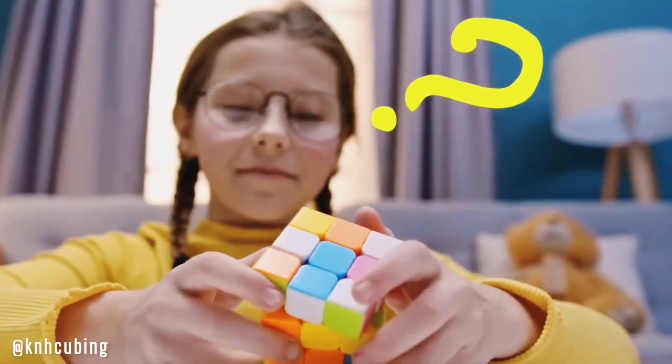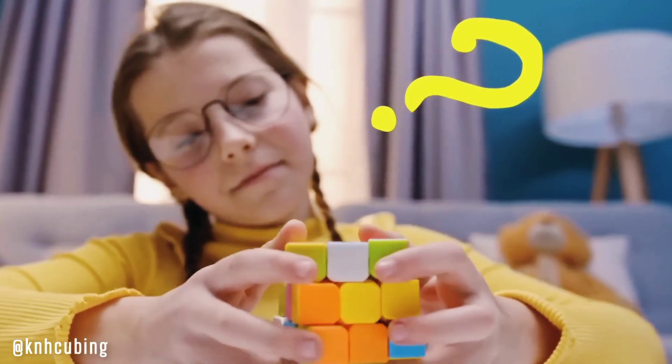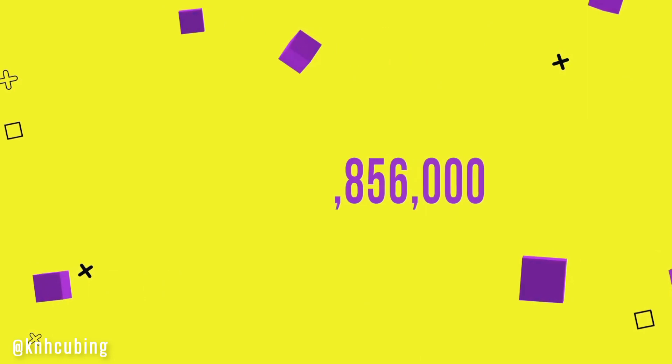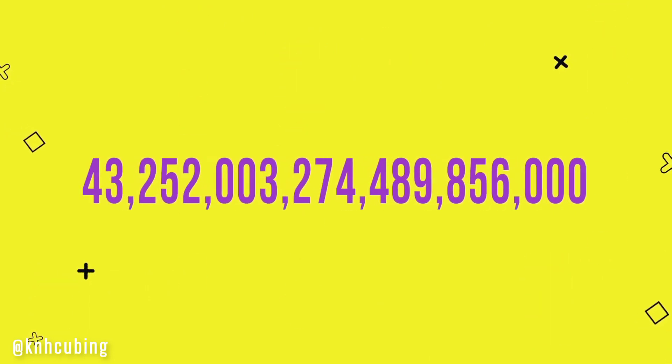How many possible arrangements does the standard 3x3 cube have? 43 quintillion. Here's the exact number.